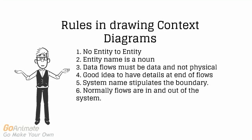Rules to ensure when drawing context diagrams: No entity to entity. Entity must be a noun. Entity is either a type of person, department, company or another system. Data flows are data and need details at the end of flows. The system is the boundary. Data flows normally flow in and out of the system.